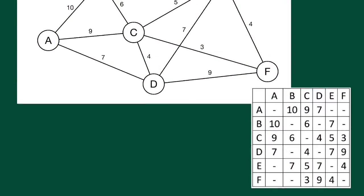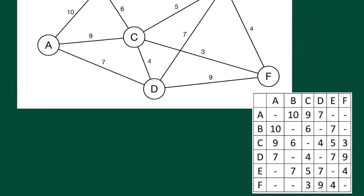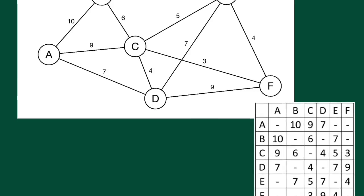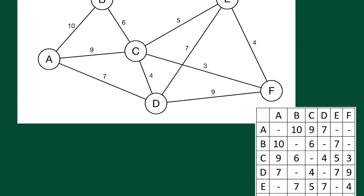For Prim's Algorithm, there are two ways of working it out: matrix method and also by looking at the graph. The graphical method is shown in a different video, this one is going to be on the matrix method.